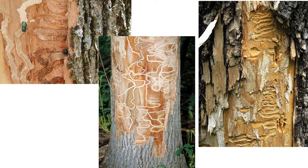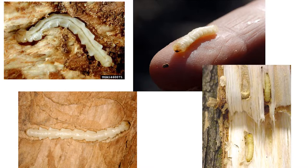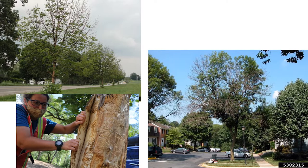Tunneling, called galleries, are described as S-shaped and will always be present. EAB larvae are creamy white with flat bell-shaped segmented bodies. These photos show similar symptoms, but one tree is EAB damaged and the other tree is damaged from the last two winters. In Dallas, most of our older ash have been damaged by the freeze.